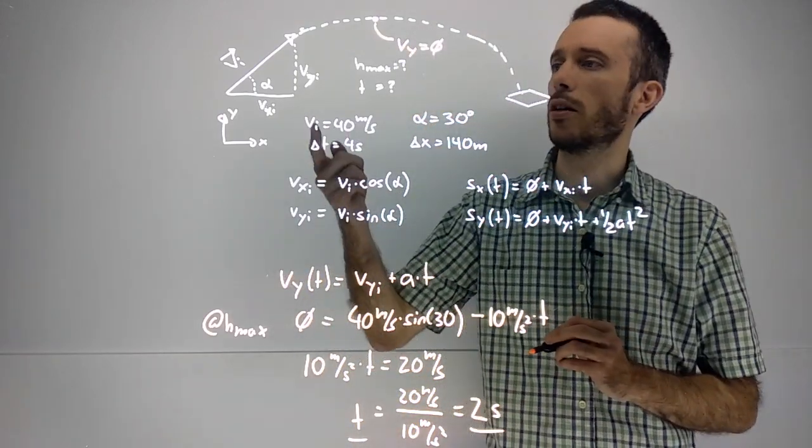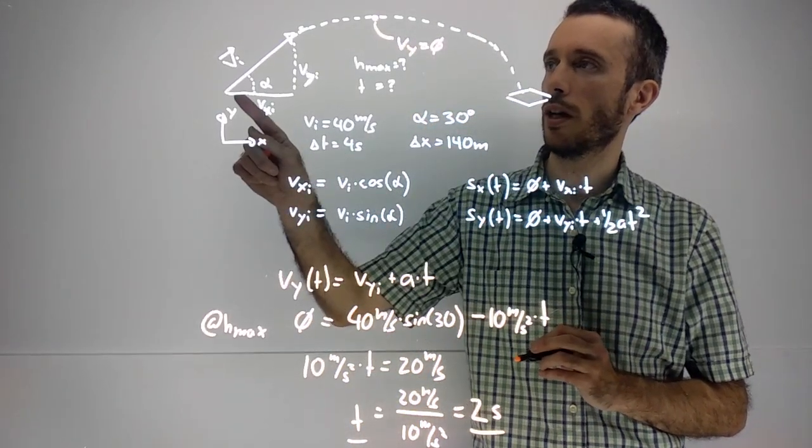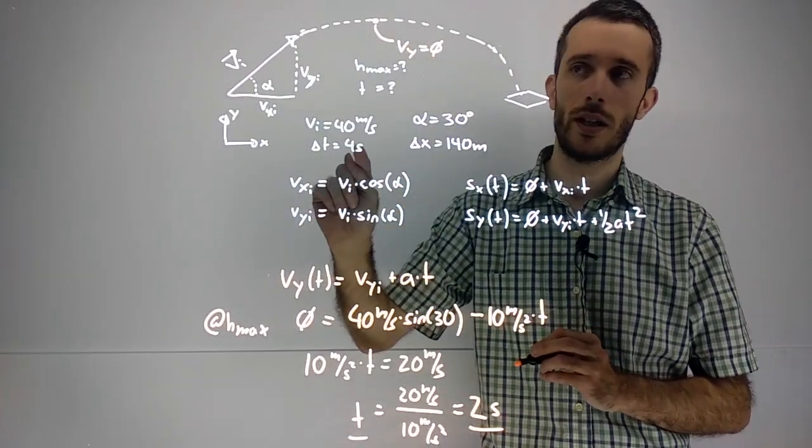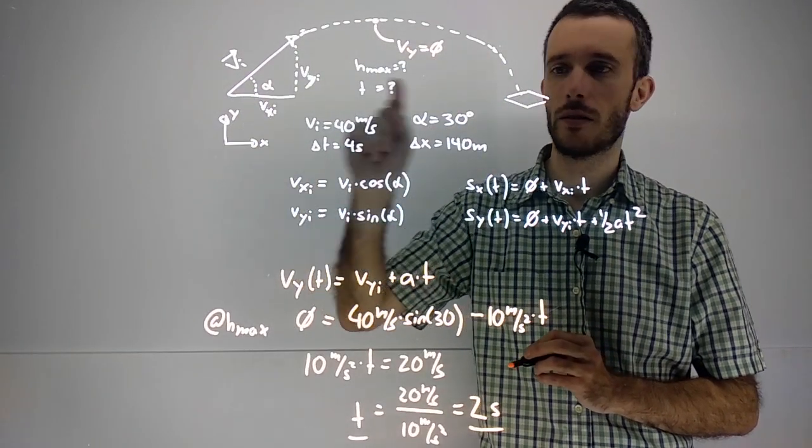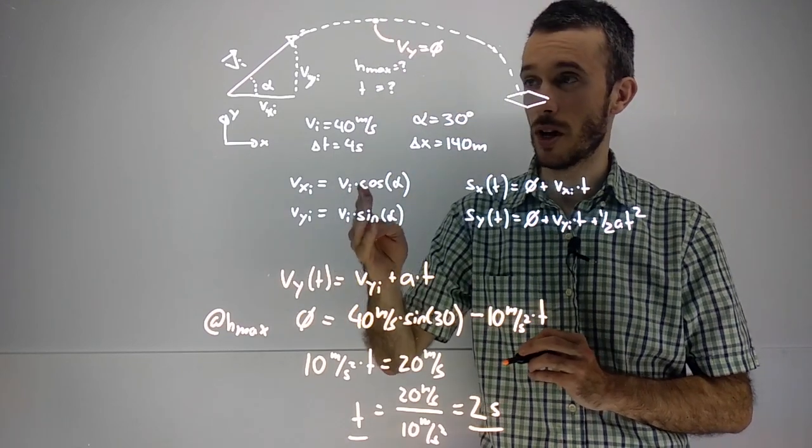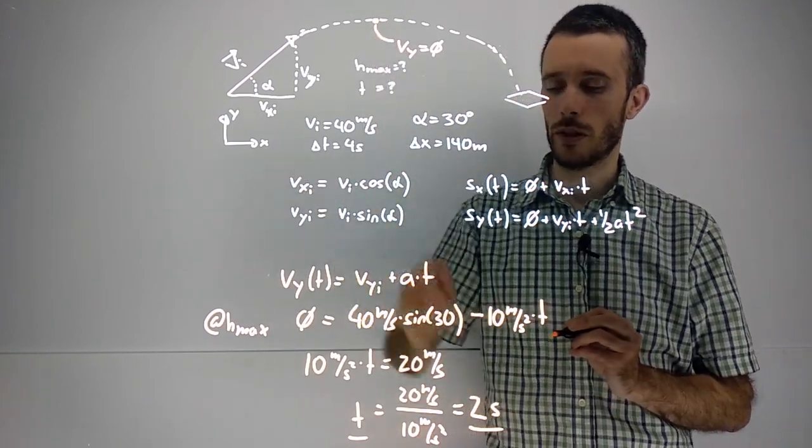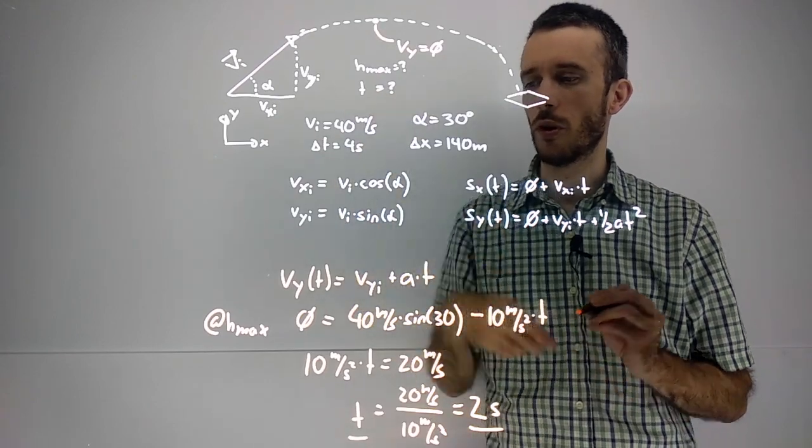Which of course in this case I could have gotten much easier, because I know that the total flight time was 4 seconds. If we start from the same height as we are landing, the whole thing must be symmetrical and the time must be 2 seconds to get to the highest point.